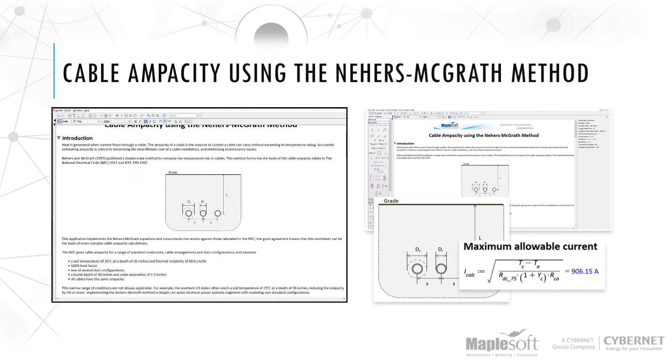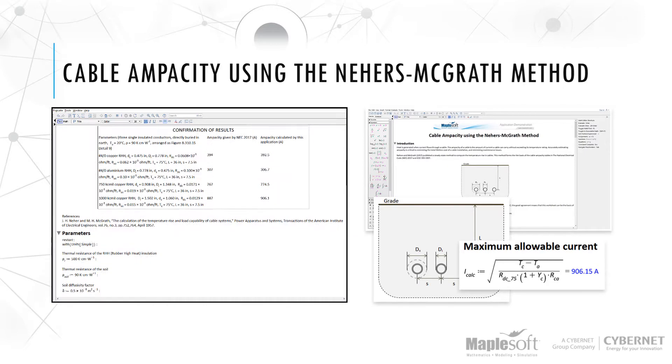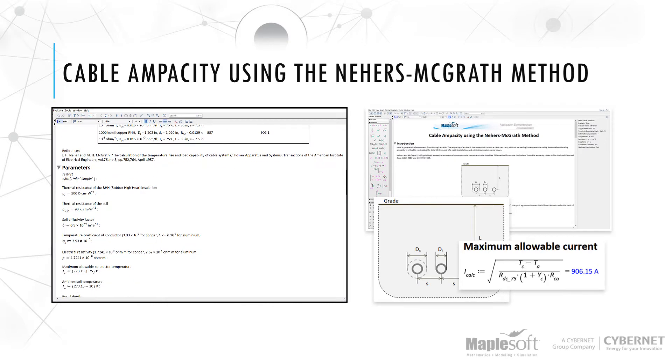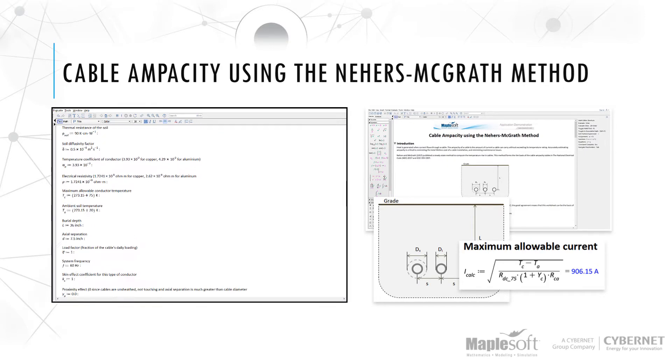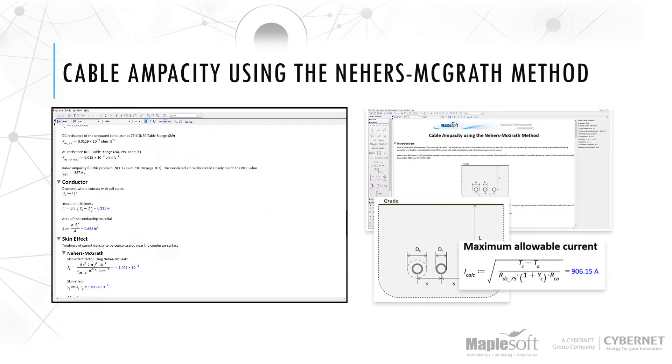Cable ampacity using the Nayer's McGrath method. Heat is generated when current flows through a cable. The ampacity of a cable is the amount of current a cable can carry without exceeding its temperature rating. Accurately estimating ampacity is critical to minimizing the total lifetime costs of a cable installation.